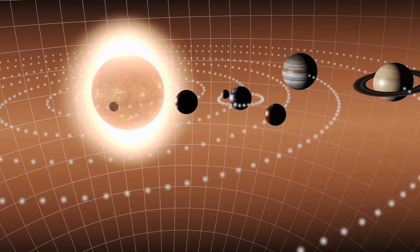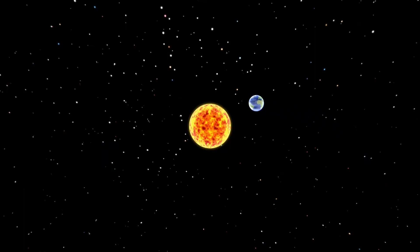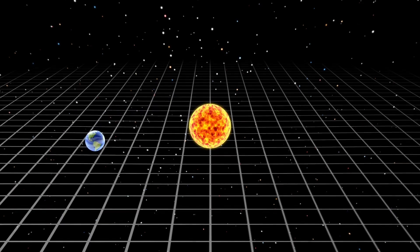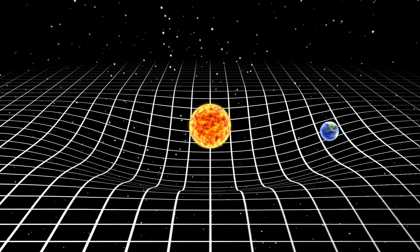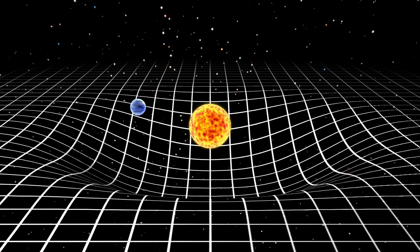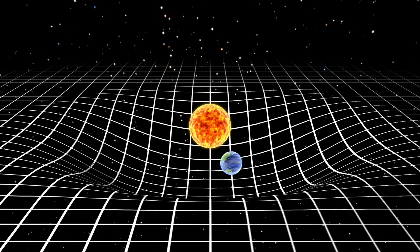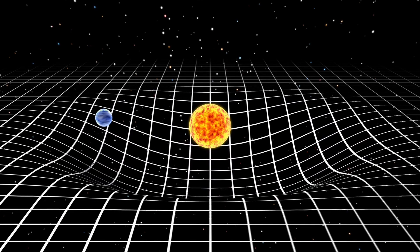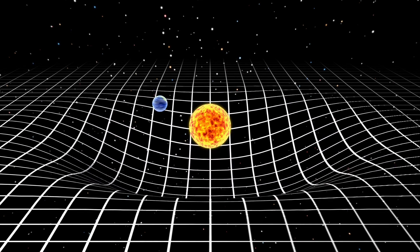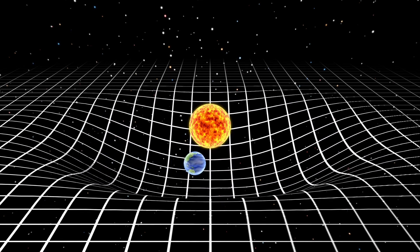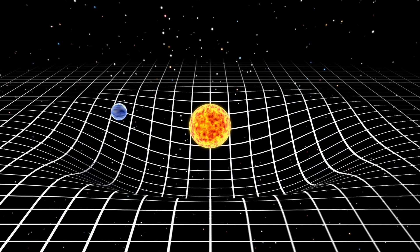The planets move in their orbits because of a force called gravity. Gravity is a force that pulls things towards each other, and the sun has a lot of gravity because it's very big and has a lot of mass. This gravity pulls the planets towards the sun and keeps them in their orbits.